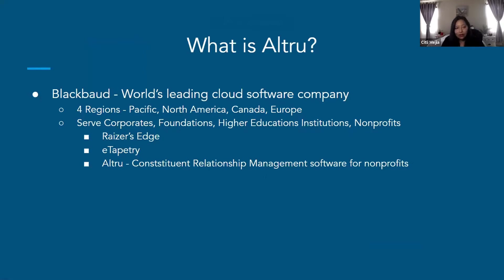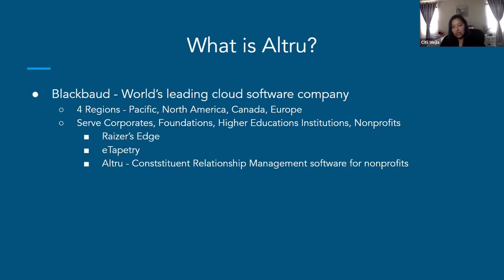Blackbaud serves four regions: Pacific, North America, Canada, and Europe. They support corporations, foundations, higher education institutions like universities, and nonprofits like us. They have different softwares — there's Raiser's Edge, eTapestry, and then AllTrue, which is what we use: constituent relationship management software for nonprofits. It really helps us connect every department we have into one system, which is what OMA really needed.